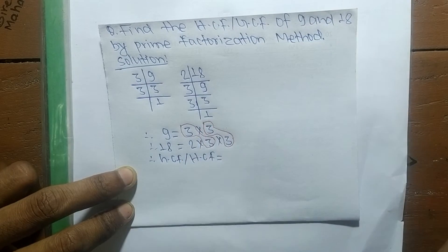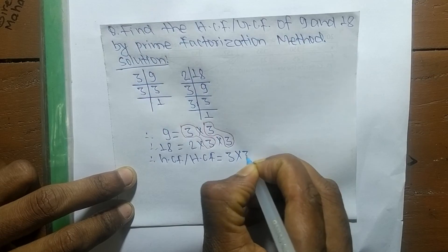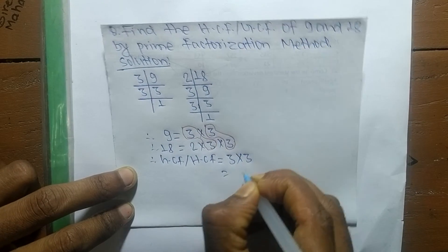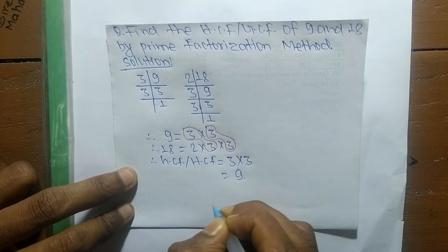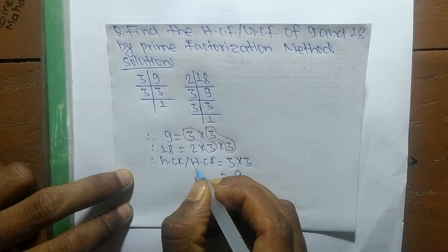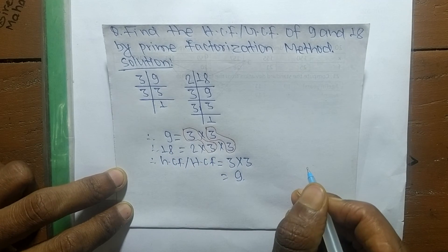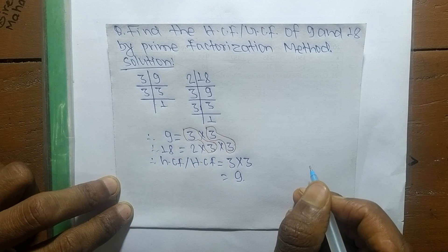So common factors here is 3 into 3. So 3 times 3 equals 9. So 9 is the GCF or HCF of 9 and 18. So this much for today and thanks for watching.